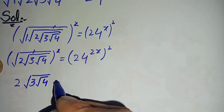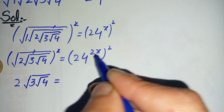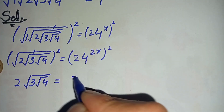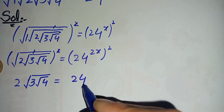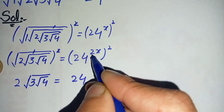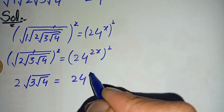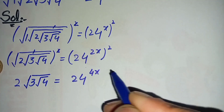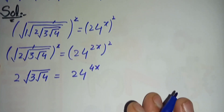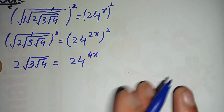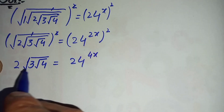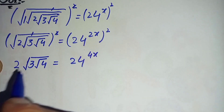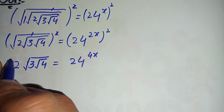On the right-hand side, we multiply the powers, so it becomes 24 raised to power 4x (since 2 times 2 is 4). And here we will take square on both sides again to eliminate this one square root.